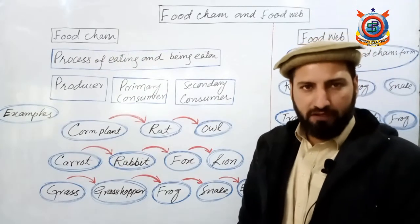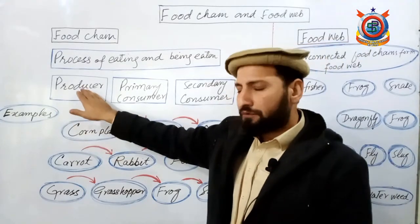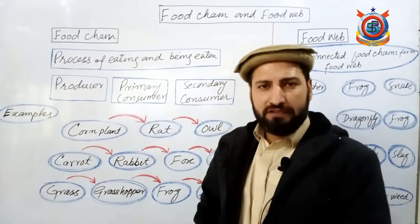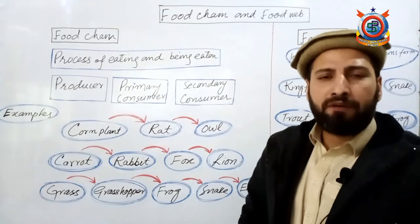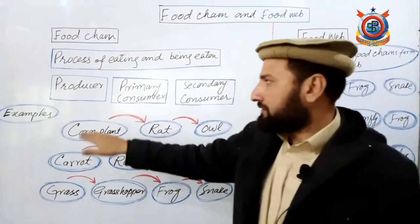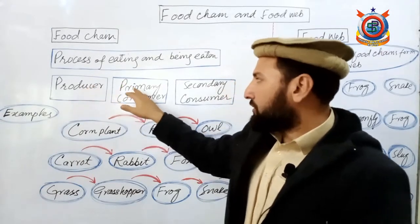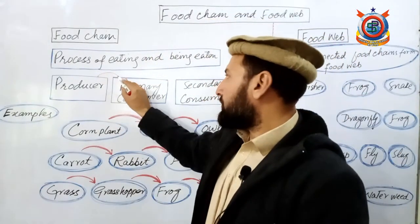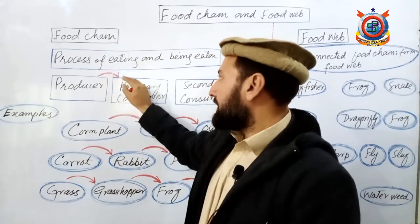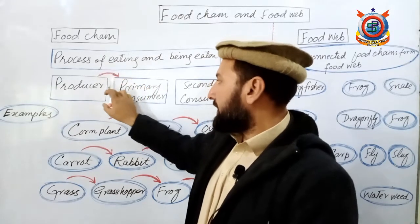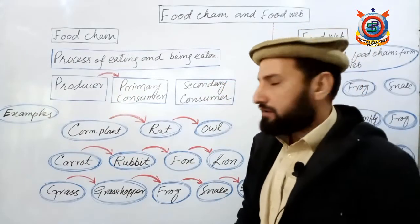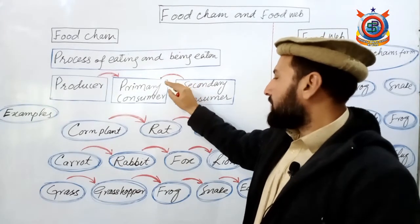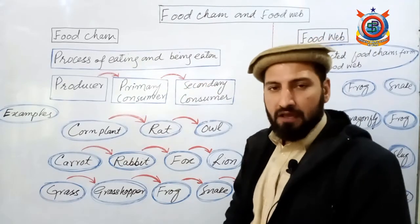Remember, every food chain has three main components. The first component is the producer, from which the food chain begins. Producers - as you know - are all organisms that can make their own food through photosynthesis. All green plants are called producers. Feeding on producers are primary consumers. Primary consumer - as you already know - are those organisms that can directly consume plants, those that take food directly from them.